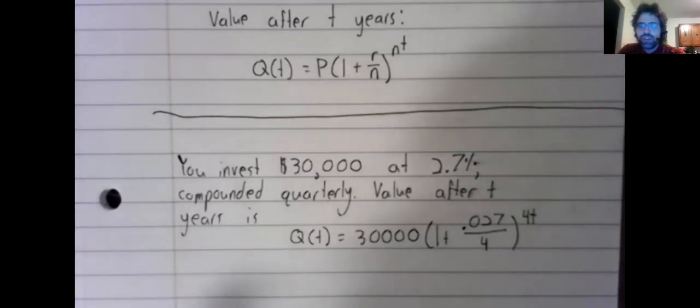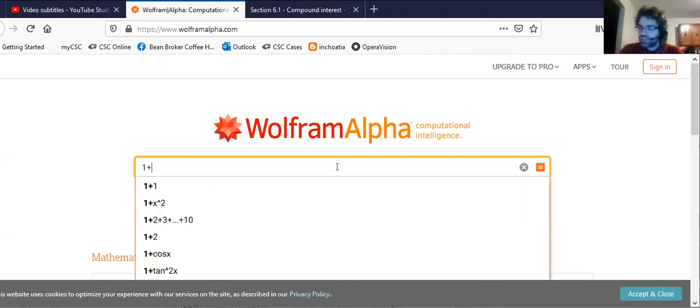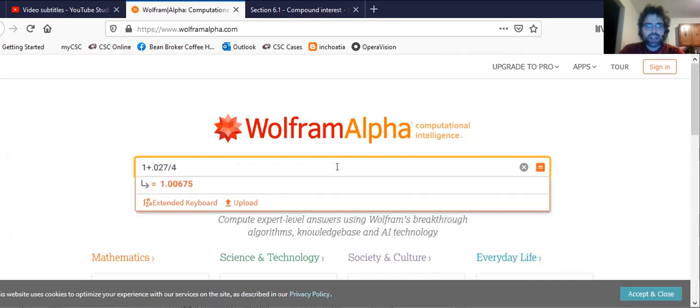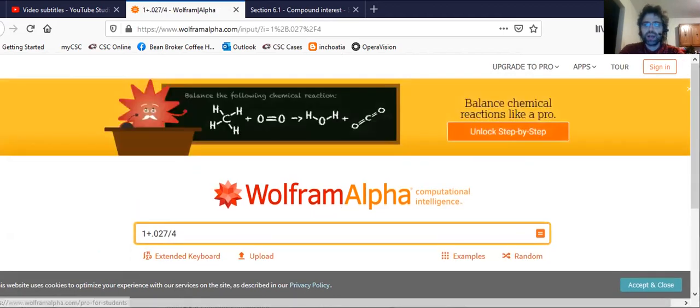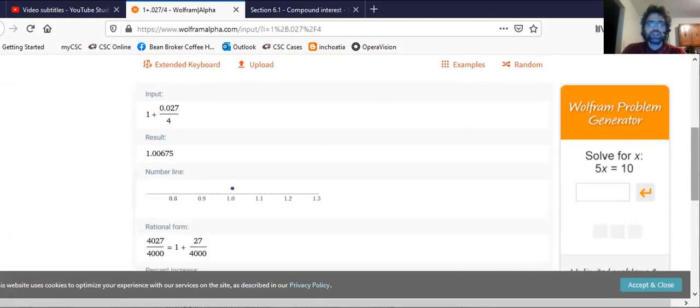And we should simplify this just a little. One plus 0.027 divided by four is 1.00675.